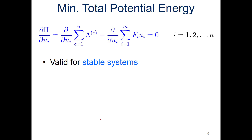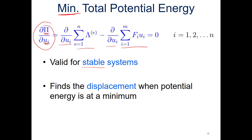The minimum total potential energy approach looks to minimize by using differentiation. We differentiate the potential energy with respect to the displacement to determine the minimum value — differentiating the strain energy and also differentiating the work done with respect to position r. This is valid for stable systems, and we'll ultimately find the displacement when the potential energy is at a minimum — hence the name, minimum total potential energy formulation.